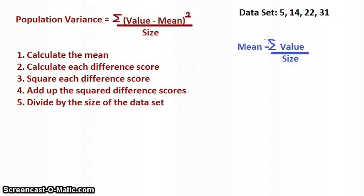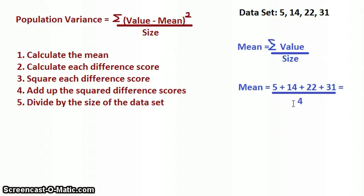To determine the mean, we add up — that's what the uppercase sigma symbol means, add them all up — all the values: 5, 14, 22, and 31, and we divide by the size, in this case four. So we add up our four values: 5 plus 14 plus 22 plus 31, and we divide by four. That comes out to be 72 over 4, or a mean of 18. So the mean for our data set is 18.